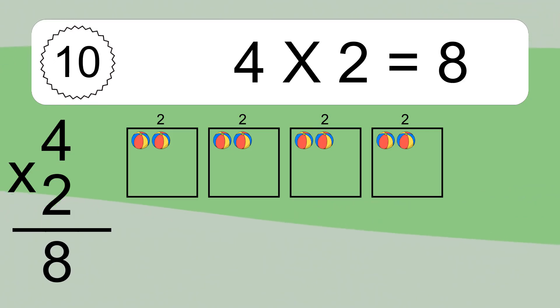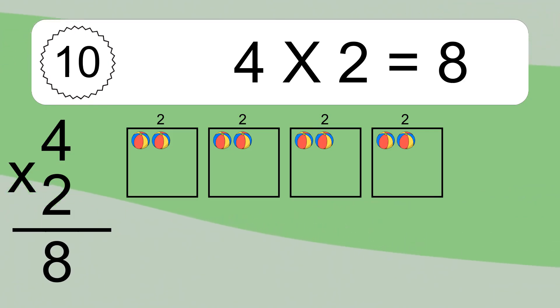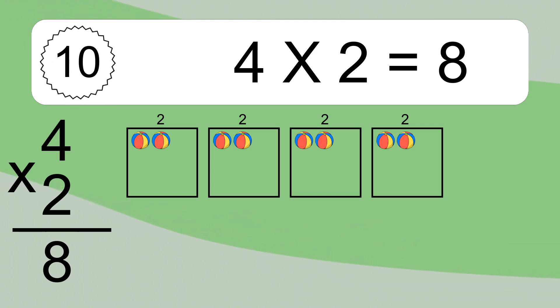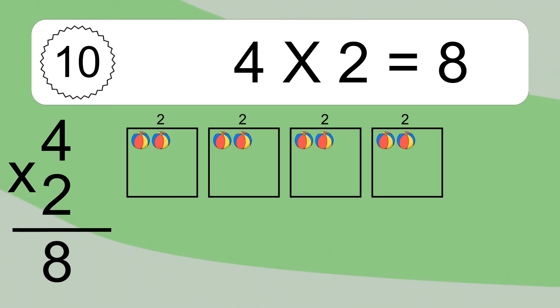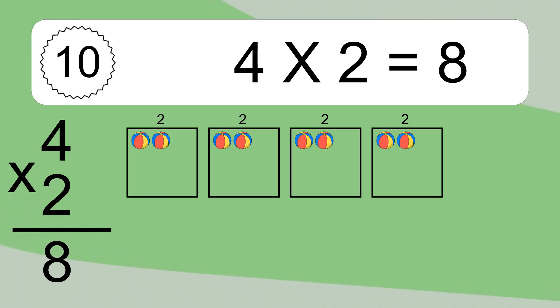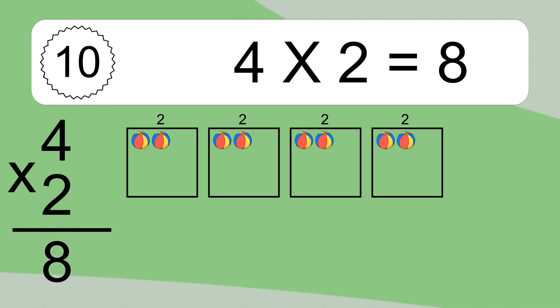We have 4 boxes, and each box has 2 colorful balls inside. If you count all the balls in all the boxes together, you will have 4 times 2 balls. This equals 8 balls.